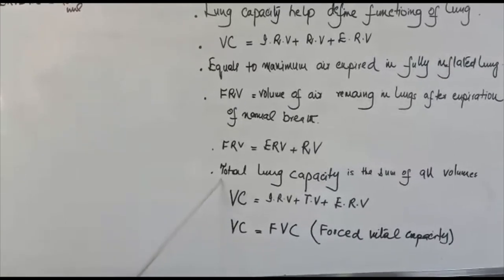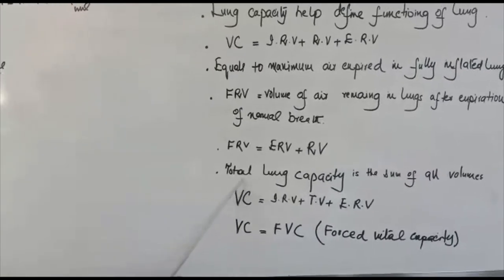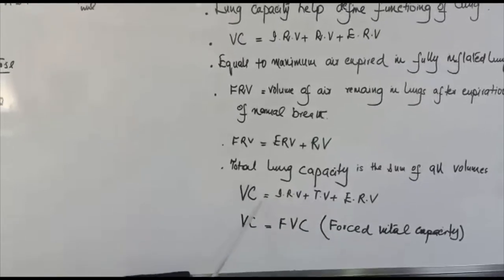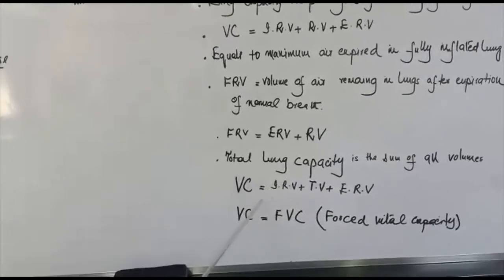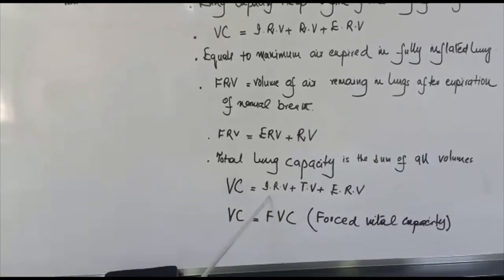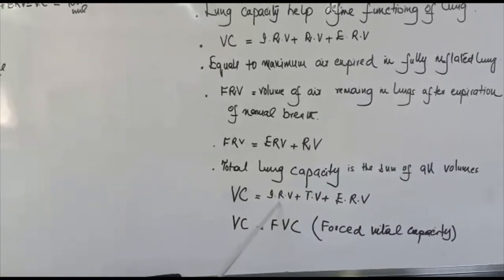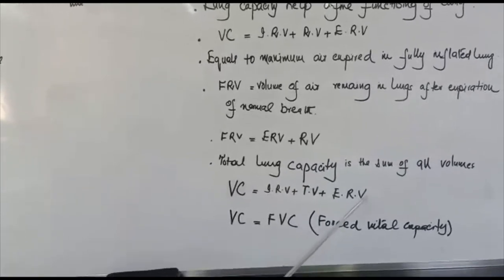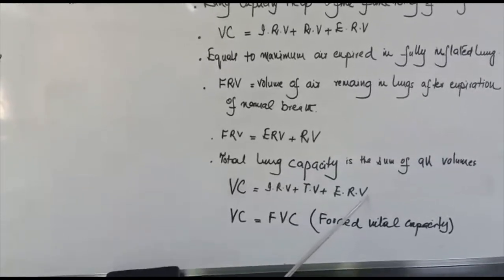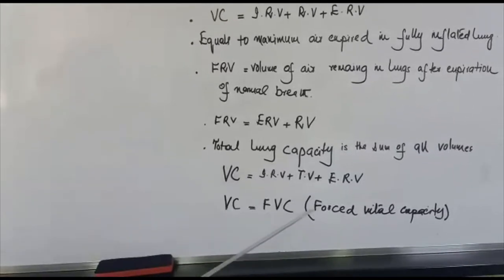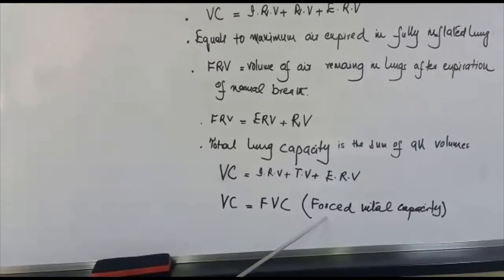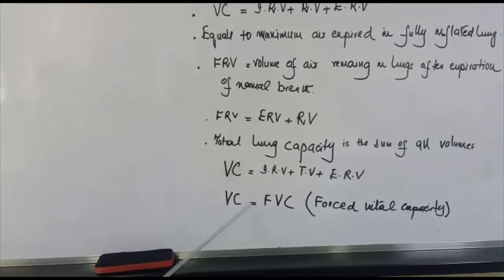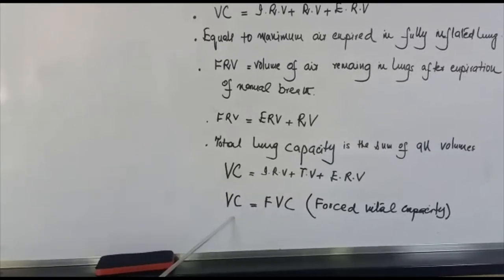Total lung capacity is the sum of all volumes, equal to inspiratory reserve volume plus tidal volume plus expiratory reserve volume plus residual volume. Then there is forced vital capacity. Forced vital capacity equals vital capacity in value. It is the largest amount of air that can be expired after maximum inspiration.